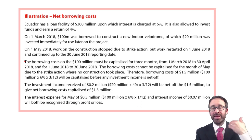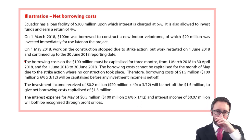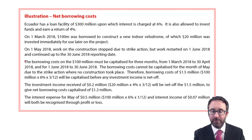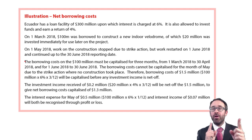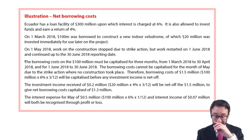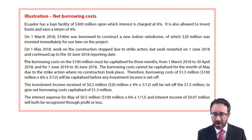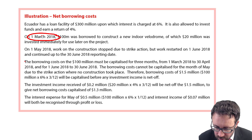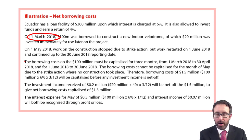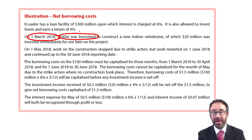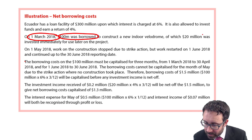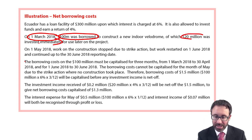We capitalise interest on the borrowings at six percent and we can net it off at four percent on what has been invested. What you borrow might not be the same as what you invest. In this question there are quite a lot of dates. On the 1st of March 2018 we borrowed 100 million to construct a new indoor velodrome, and of that, 20 million was invested immediately.